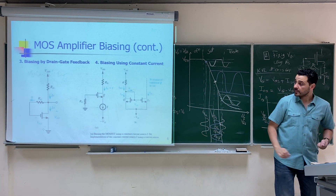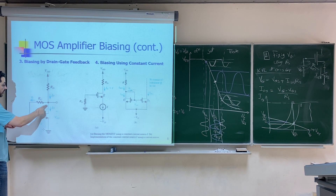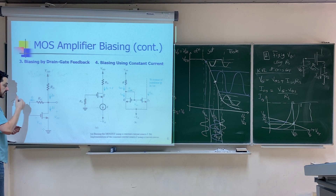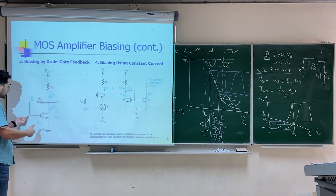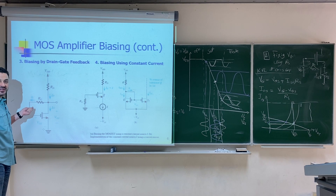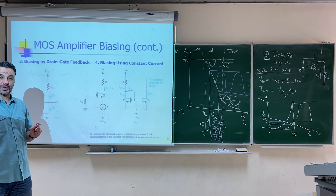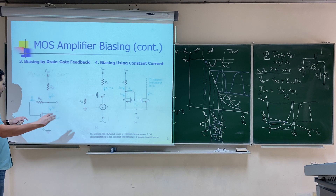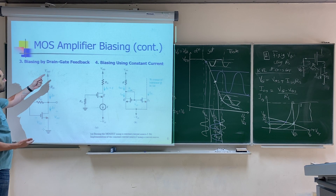Two other biasing techniques: the third is drain-gate feedback. You connect the drain and gate through a large resistance — it must be large; a short circuit would make input and output the same signal, giving no amplification. Connecting drain to gate guarantees the transistor is in saturation, and you control the operating point by choosing an appropriate value for RD.